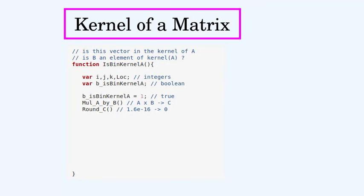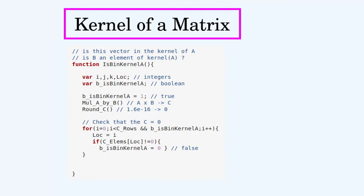We'll round the vector C to make all of the tiny numbers equal to zero so that the equality functions will work properly. We'll create this loop to look at every entry in C. If B is in the kernel of A then C should be the zero vector with every entry being zero. We'll check for that here. And here is where we'll return the return variable, saying whether or not B is in the kernel of A.